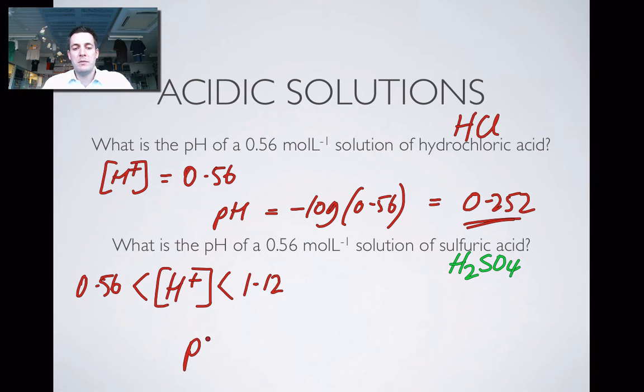So what can we say about the pH? Well, if the H+ ion concentration is greater than this, then the pH must be less than this value here. We can't quantify this exactly, but we can say that the pH is going to be in a range. We can also say that the pH is going to be greater than it would be if we had this concentration of H+.